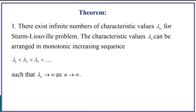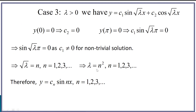Let us see an interesting theorem with three results. If you have a Sturm-Liouville boundary value problem, then there will always be an infinite number of characteristic values. These infinite characteristic values can be arranged in a monotonically increasing sequence: λ₁ < λ₂ < λ₃ < ... and λₙ → ∞ as n → ∞. If you tally this with our example, lambda = n², and as n → ∞ this goes to infinity, and for n = 1, 2, 3, ... these are all monotonically increasing.